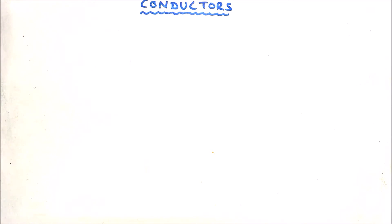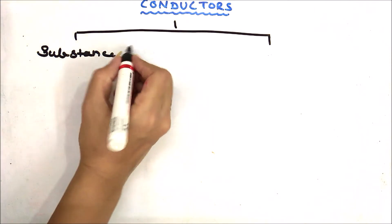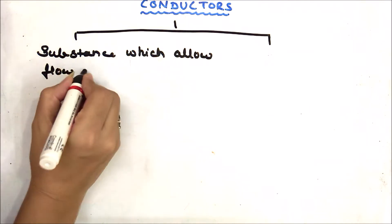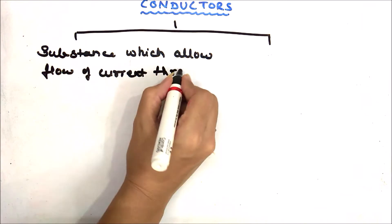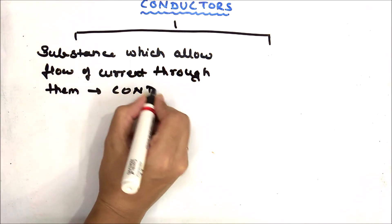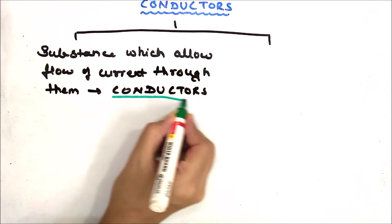You know very well that some compounds conduct electricity — they allow the flow of electricity — whereas some substances do not allow the flow of electricity through them. Substances which allow the flow of electric current through them are called conductors, and substances which do not allow the flow of current are called insulators.